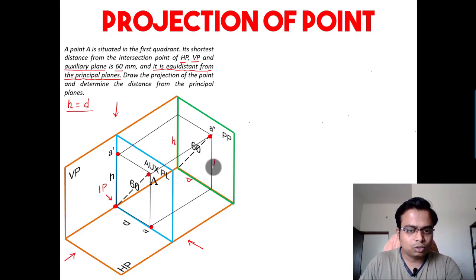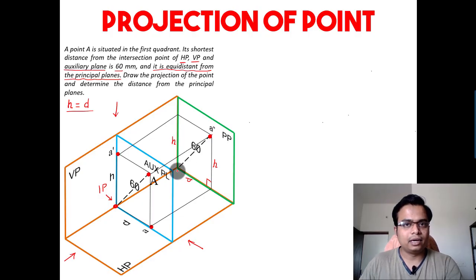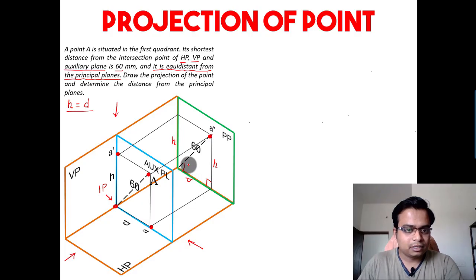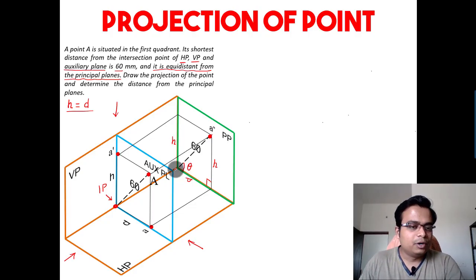This is D, this is H. If you take a look at this triangle, this angle is 90 degrees — that means it's a right-angle triangle. Therefore you have every right to apply trigonometry. This angle is represented as theta. If I write tan theta, what I can essentially write is opposite over adjacent, that is perpendicular over base, which gives H over D.